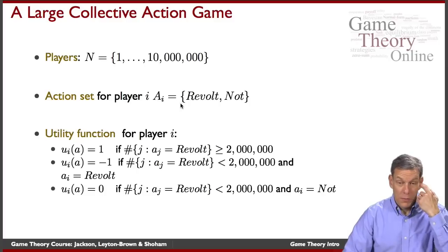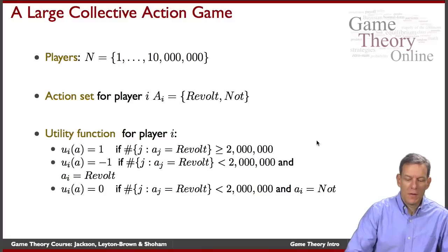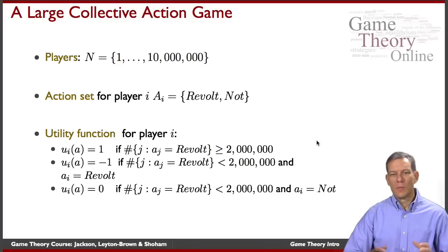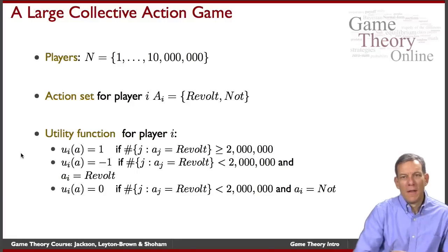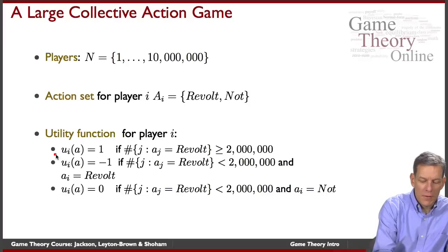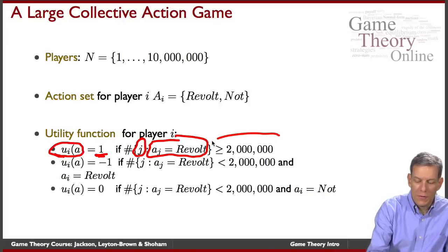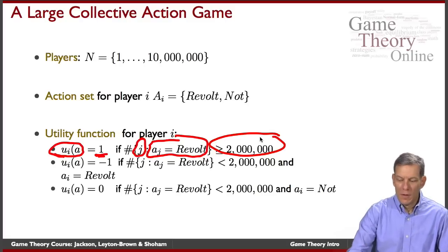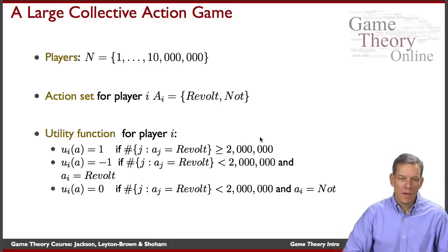The payoffs are going to be the critical thing in this game. Let's say that in order for revolt to be successful you need at least two million people to participate. In this particular stylized example, we can represent a successful revolt as the player getting a payoff of one. So u_i of the action profile A is equal to one if the number of players j such that they picked to revolt is at least two million. If we end up with at least two million people revolting, then player i gets one.